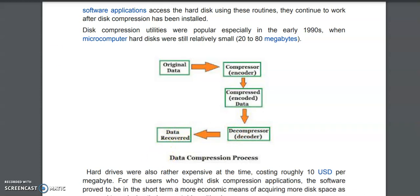How exactly does it work? There are different encoding techniques with the help of which this compression is done. For example, suppose you are storing data that has some common words — these common words will be replaced with a single token. For example, if you are using the word 'for' multiple times, it will be replaced with a single symbol, and the encoder works accordingly. This is one way.